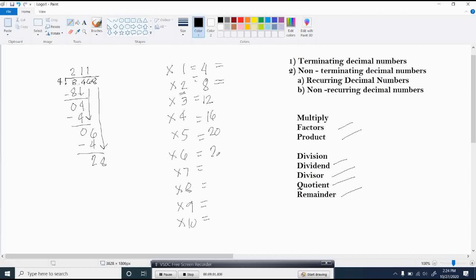4 multiply 6 is 24, 28 for 7, 32 for 8, 36 for 9, and 40 for 10. Do we have 28 in table 4? Yes, we have. And that is by table 7. So use that number 7 to multiply by 4 so that you will get 28. Then proceed to subtraction. 28 minus 28 is 0.